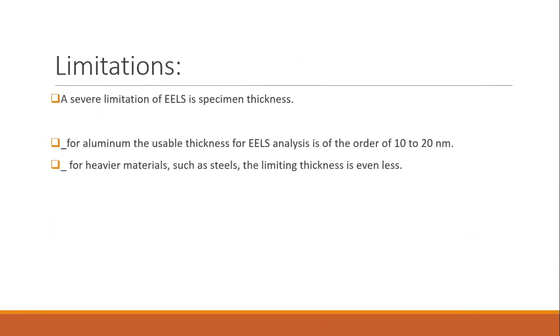Limitations: several limitations of EELS in specimen thickness. For aluminum, the usable thickness for EELS analysis is of the order of 10 to 20 nanometers. For heavier materials such as steel, the limiting thickness is even less.